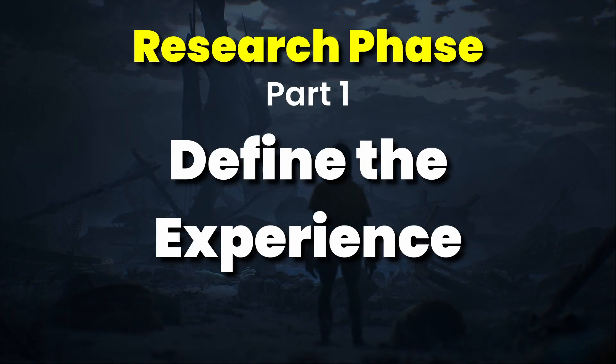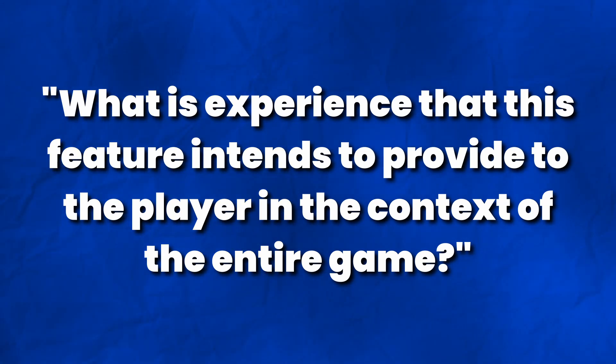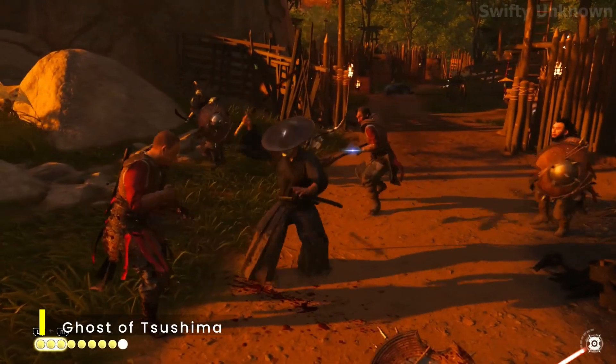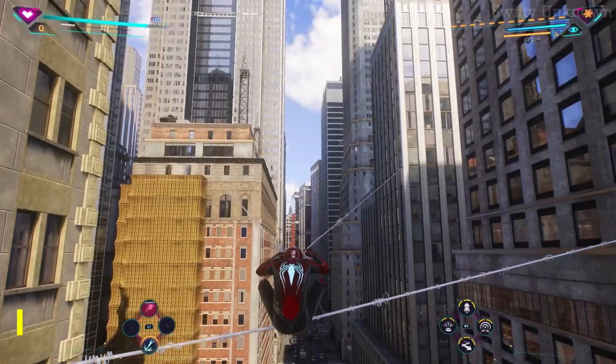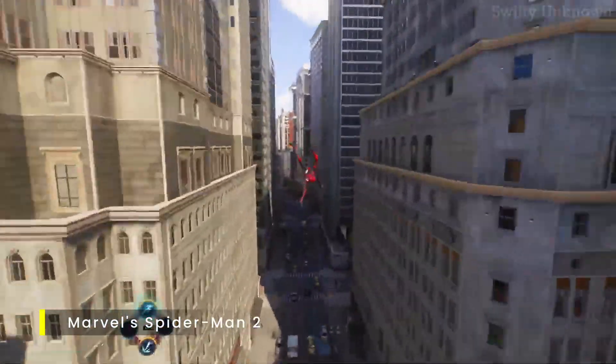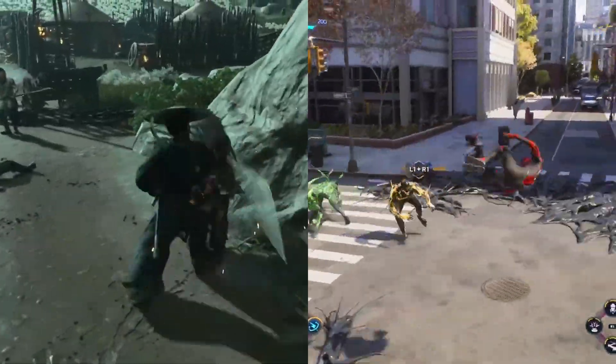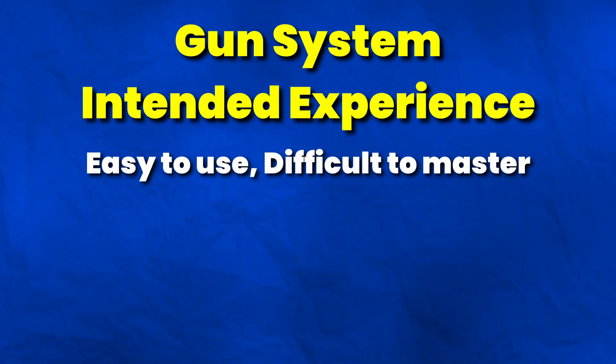I also break down my research phase into three parts: defining the experience, collecting references, and planning the design. The first thing is to define the experience — specifically, what is the experience this system or feature intends to provide to the player in the context of the entire game? Doing this first gives you a goal that every decision for your feature should strive to achieve. This could be about defining what your player should feel and experience while engaging with the feature, like how Ghost of Tsushima wanted players to experience quick, realistic samurai combat, or Spider-Man famously intends to make you feel like Spider-Man.